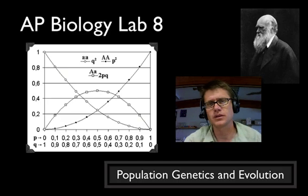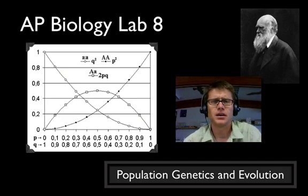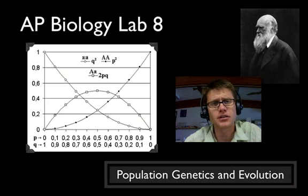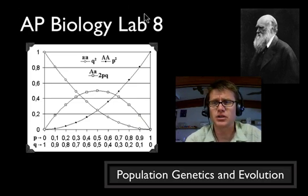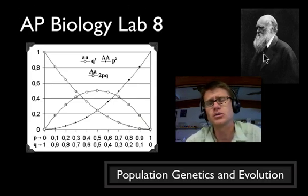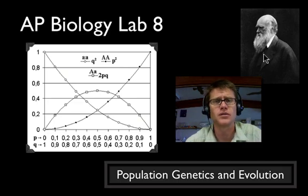Hardy-Weinberg is a way to describe in a population how the genes will change over time, or a better way to say that is how they won't change. And so the reason I put a picture of Mr. Darwin here is that we can use Hardy-Weinberg equilibrium to observe when evolution is actually taking place in a population. And so what we're dealing with is microevolution, in other words changes within the gene frequencies in a population.